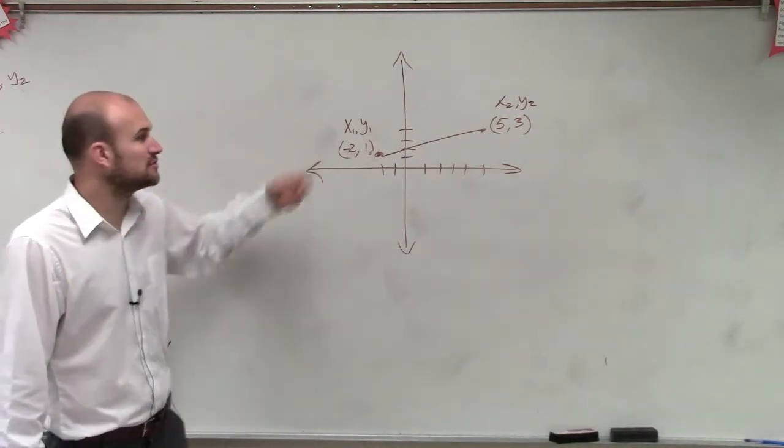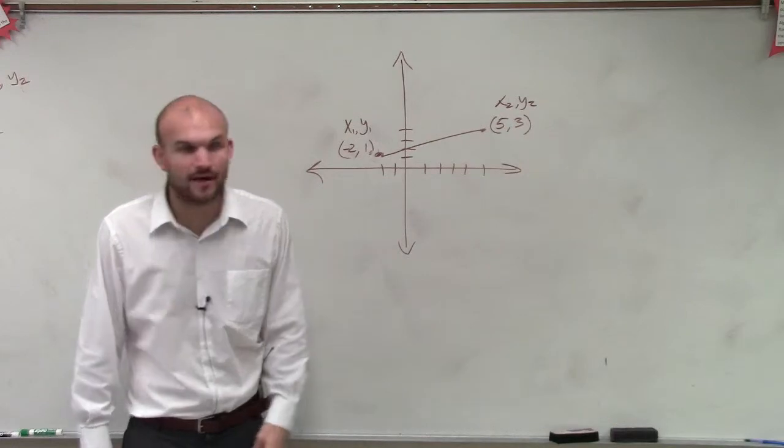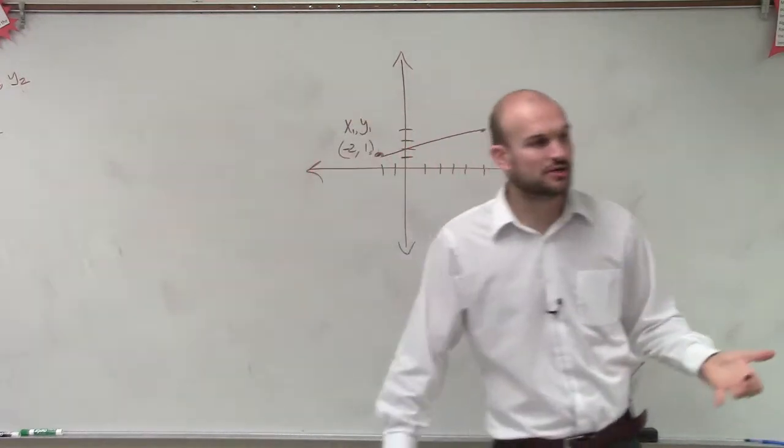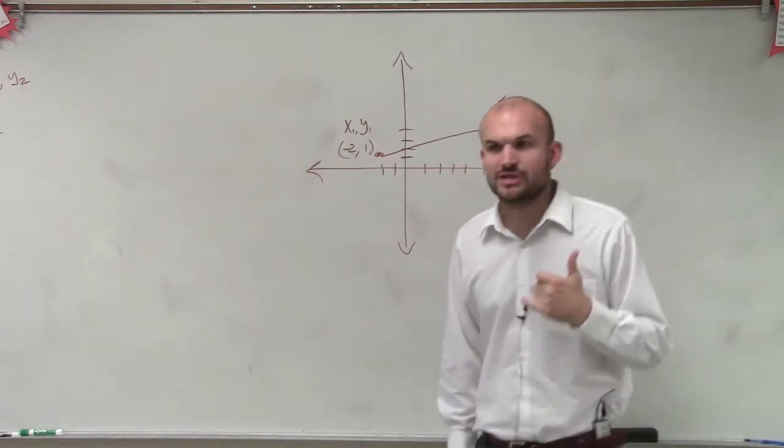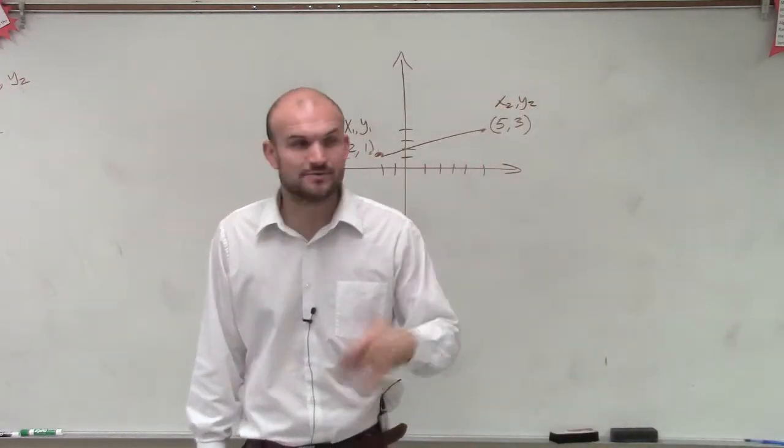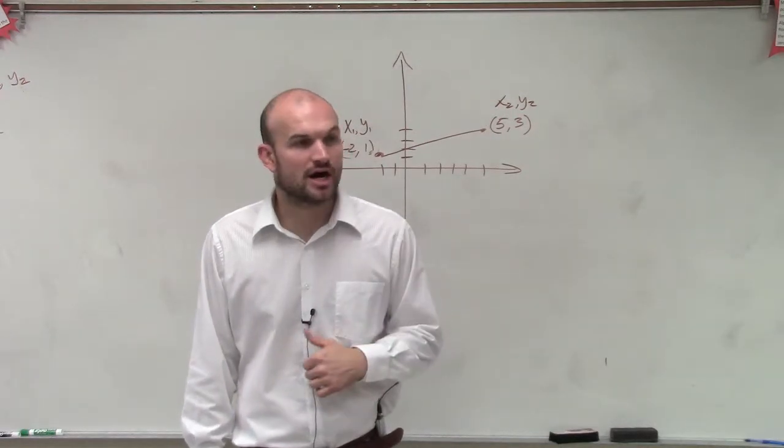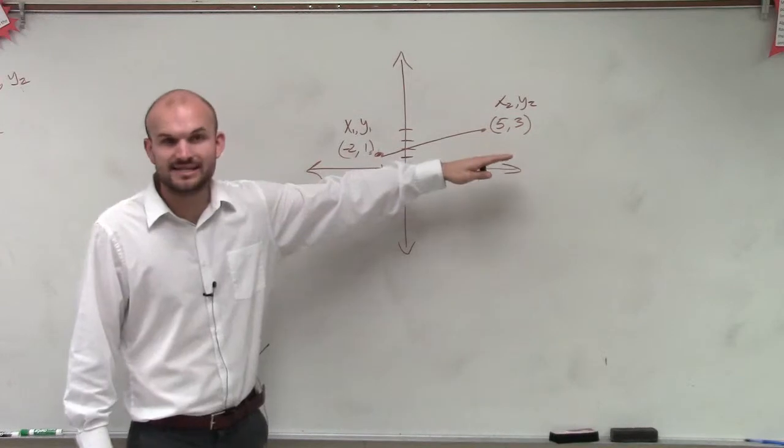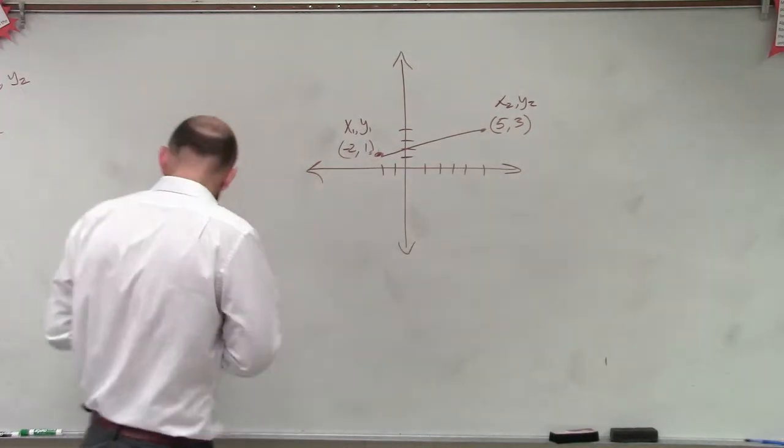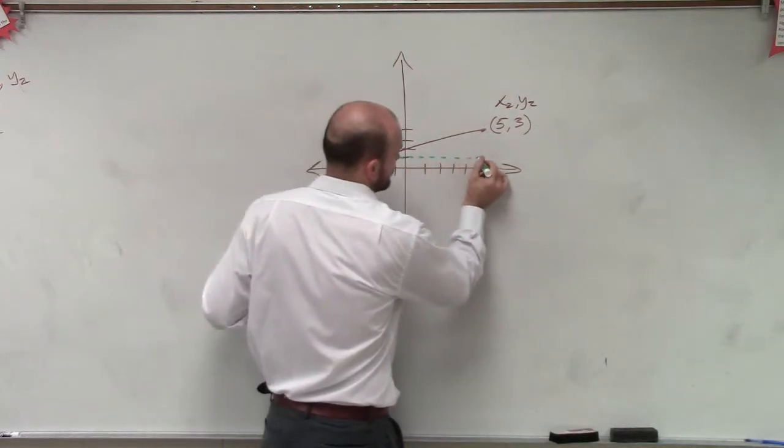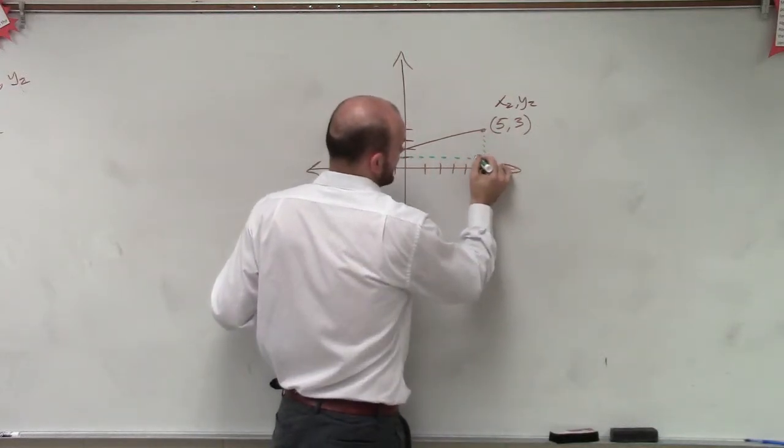So now what we want to do is figure out the distance. We need to go back to what we remember from geometry class. The important thing from geometry class is Pythagorean theorem. That's what we're going to use to find our distance. Because to find this distance, if I create a right triangle, that means I can create a horizontal line and then a vertical line.